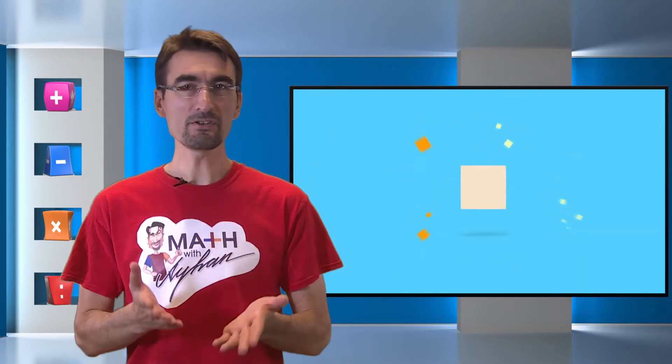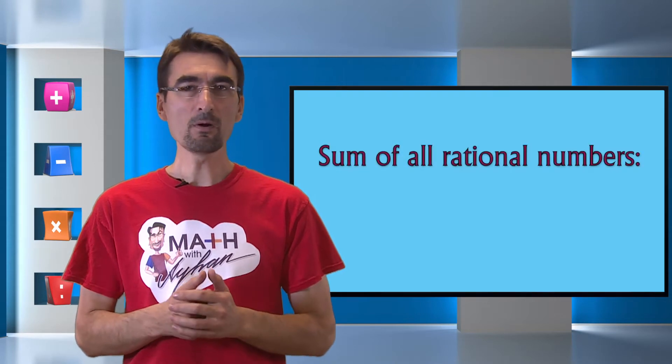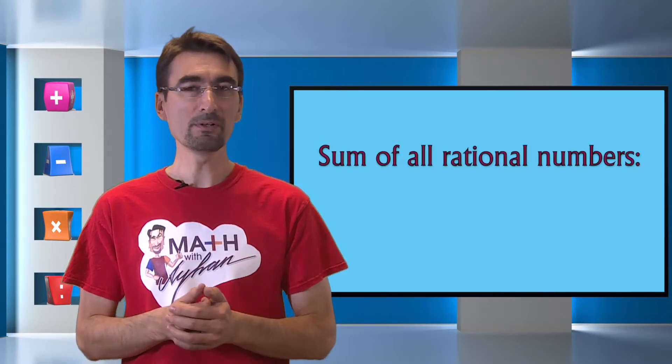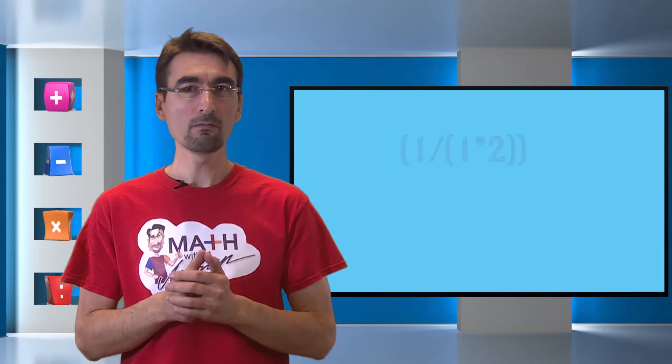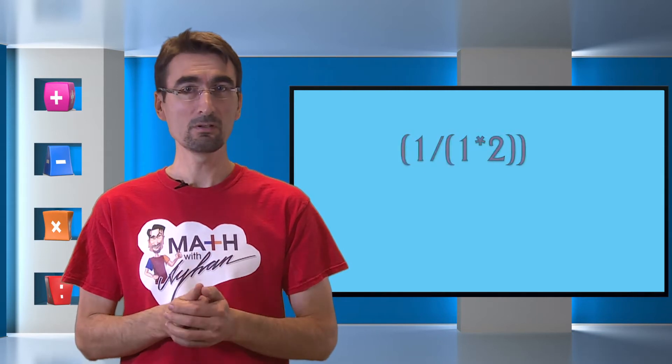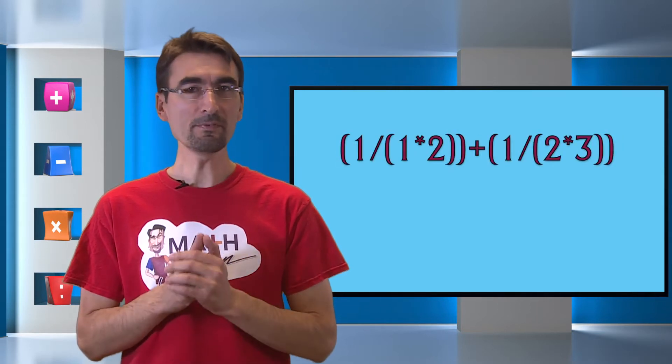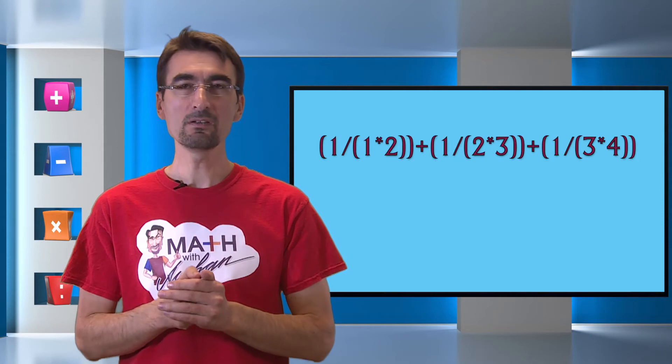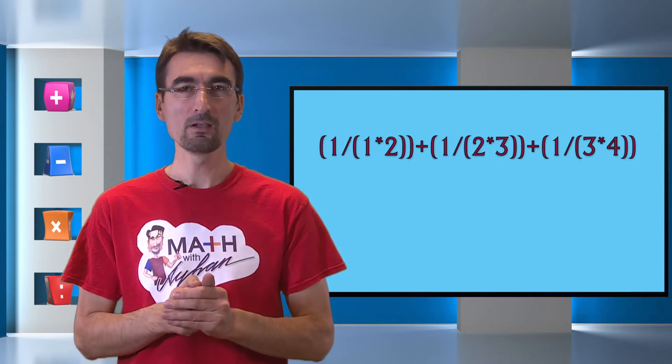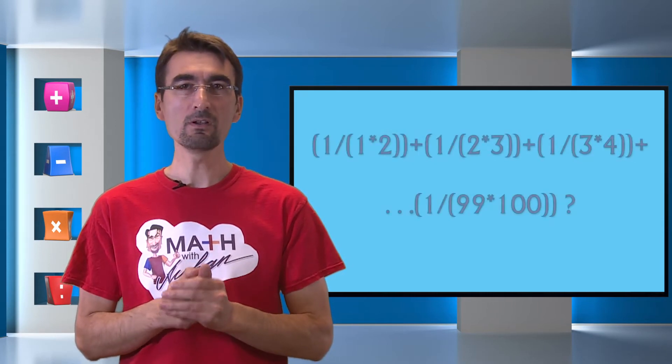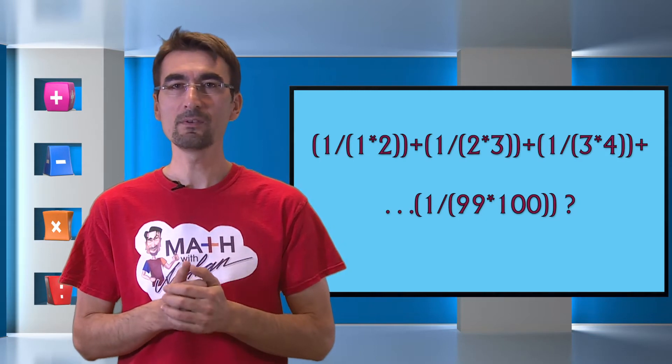Watch me. Here's the question. What is the sum of all rational numbers in the form of 1 over 1 times 2 plus 1 over 2 times 3 plus 1 over 3 times 4 plus all the way up to 1 over 99 times 100?